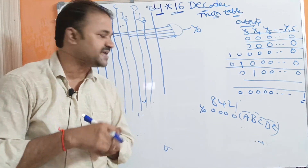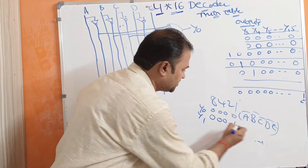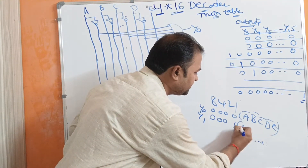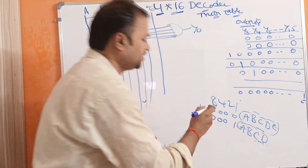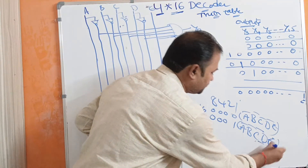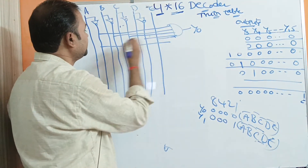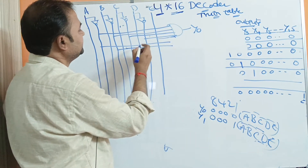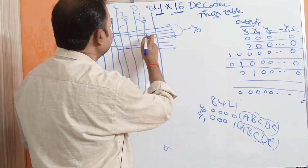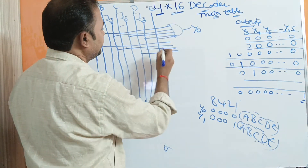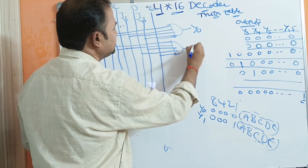When Y1 is active, the inputs are 0, 0, 0, 1. So 0001 means A-bar, B-bar, C-bar, D, and enable input E. So A-bar is this line, B-bar is this line, C-bar is this line, D is this line, and enable input is this line. This AND gate represents Y1.